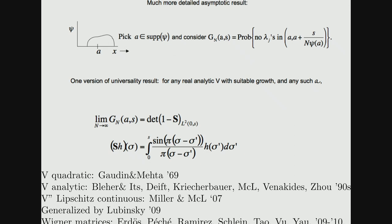The first result of this kind was in 1969 by Gaudin and Mehta; it was extended to analytic and Lipschitz continuous functions by Doron Lubinsky, and in the direction of Wigner matrices there is a fantastic group of results — Laszlo showed us a table summarizing all those results.